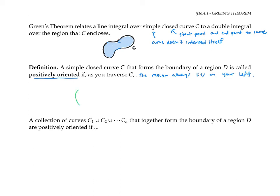So if I draw the following region and boundary curve for that region, then if I want the boundary curve to be positively oriented, I need to orient it counterclockwise, so that my region will always be to my left as I travel along this curve.